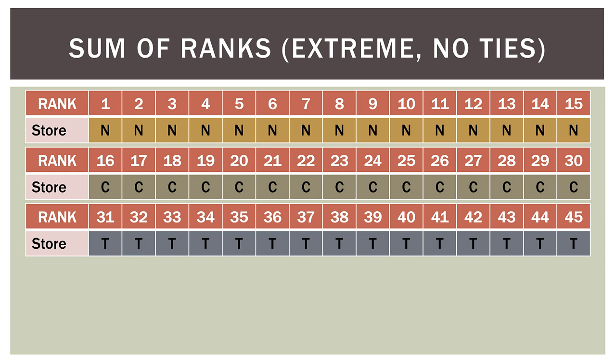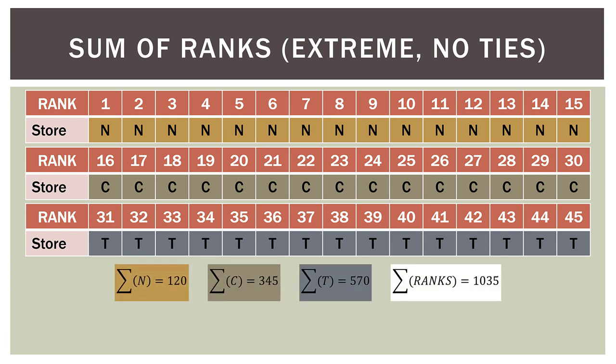We can sum the ranks for each of those three cases. For Nariman Point, summing ranks 1 through 15 gives 120. For Churchgate, summing ranks 16 through 30 gives 345. For Taj Mahal Palace, summing ranks 31 through 45 gives 570. Now if we sum all the ranks in total, it's 1035. For Nariman Point, the lowest possible sum is 120, and for Taj Mahal Palace the highest possible sum is 570, with Churchgate literally in the middle at 345.